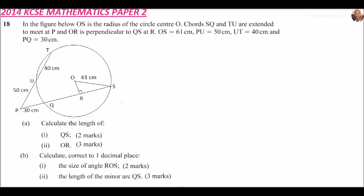In Form 3, you learned this property: if you multiply PS by QS, it's the same as PT multiply by PU.